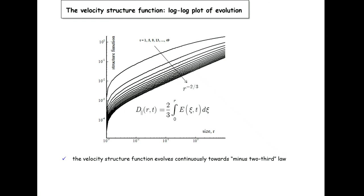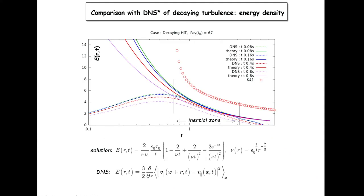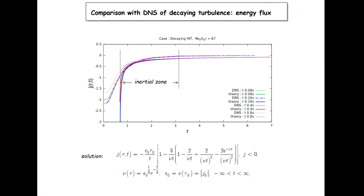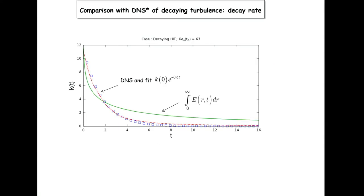On positive times we approach Kolmogorov-Obukhov 41. The analytical solution for the structure function goes to R to the power minus two-thirds. We have also performed direct numerical simulation in the inertial zone, which gives very similar results to the theory for the energy density function and for the flux, though the decay comparison is not as good because there is no viscosity in our theory.